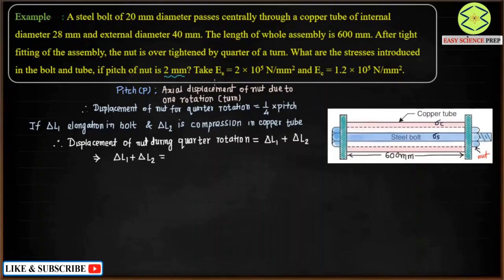During one complete rotation the nut moves by 2 mm, which is the pitch. During a quarter rotation it moves by 1/4 times the pitch, that is 1/4 × 2 mm = 0.5 mm. So: delta L1 + delta L2 = 0.5 mm. This is Equation 1.